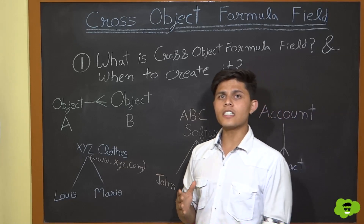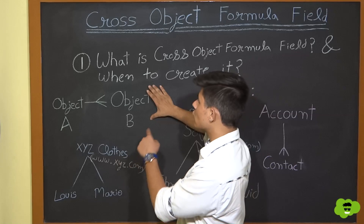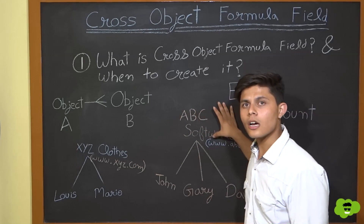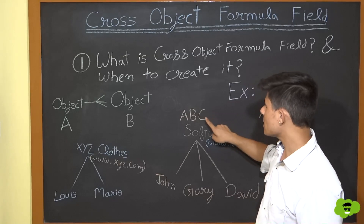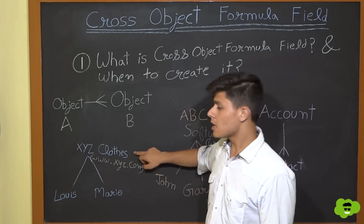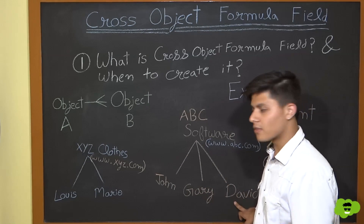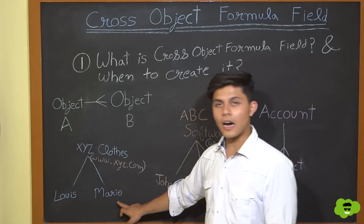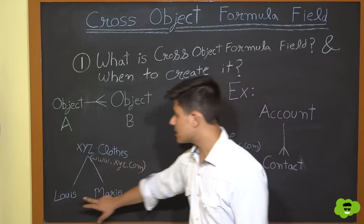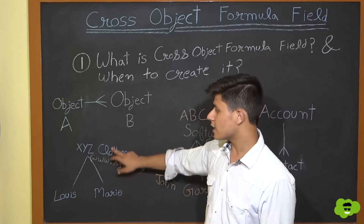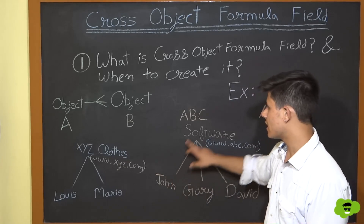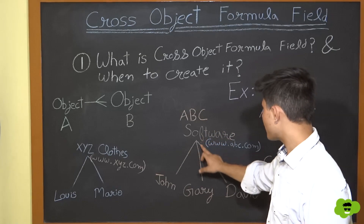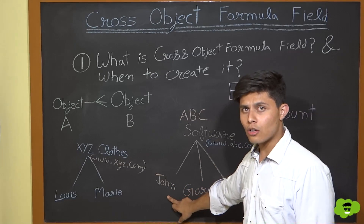You create cross-object formula fields whenever you want a field from Object A's record to be visible on Object B's records. For example, we have two account records: ABC Software and XYZ Clothes. Three contacts — John, Gary, and David — work at ABC Software, while Louis and Mario work at XYZ Clothes. These contact records are related to their respective account records.